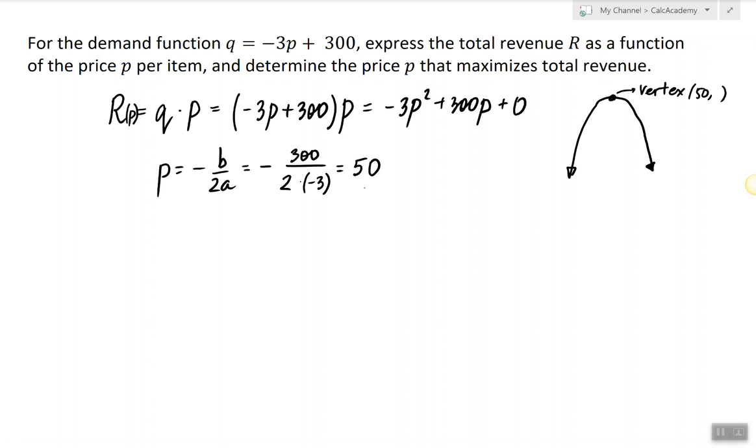So the answer to the question, what is the price p that maximizes the total revenue, is the price that maximizes the total revenue is 50, and the units are not given.